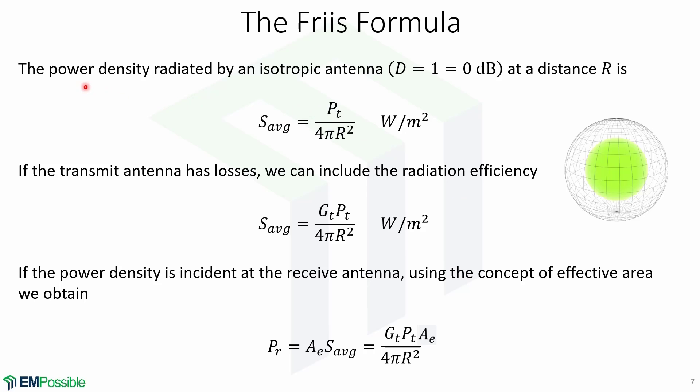First, we will look at the power density radiated by an isotropic antenna, reminding that the directivity equals 1 or 0 decibels, and at a distance R, the power density is given by Pt over 4πr², watts per meter squared.